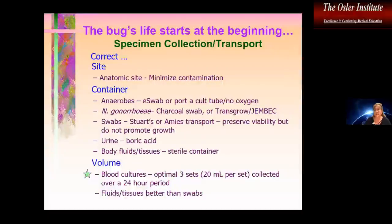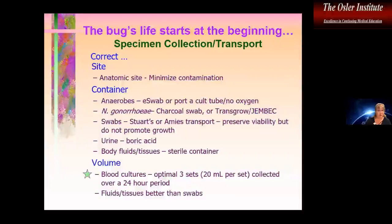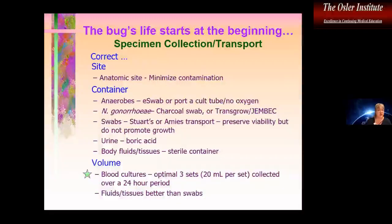If we're not collecting tissues and fluids — which are obviously the most fabulous specimens — we need to make sure the container the specimen is transported in is appropriate. For instance, if we're collecting urine, we should put it in a preservative transport container to prevent overgrowth during transport. If we're using swabs, we need the right swabs with the right transport. Volume is also important: for blood cultures, three sets of 20 mLs per set collected over a 24-hour period is optimal.